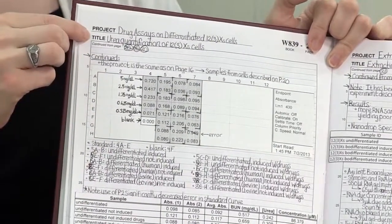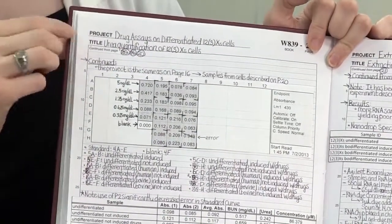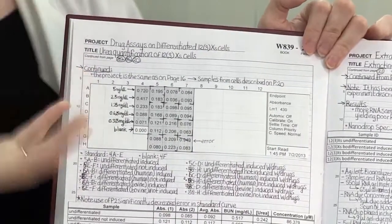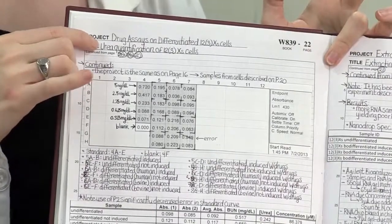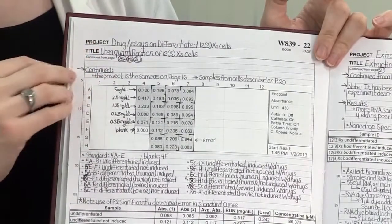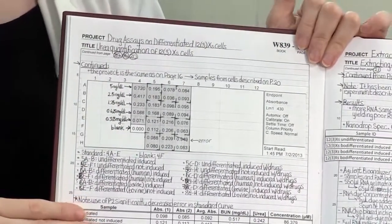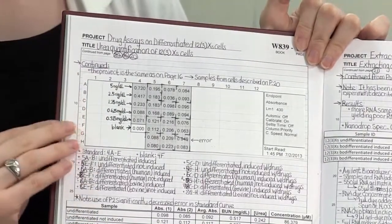It's also really important to have a detailed title that will help you remember what you did at a glance. I like to talk a little bit about what technique I'm doing in that section as well as what cell type I'm looking at and so forth.